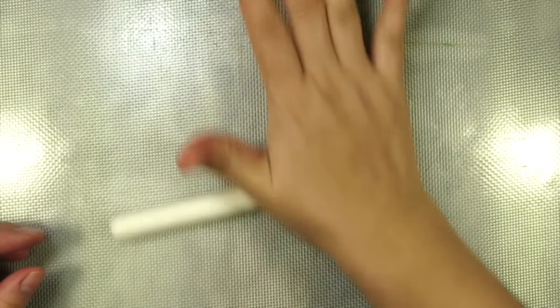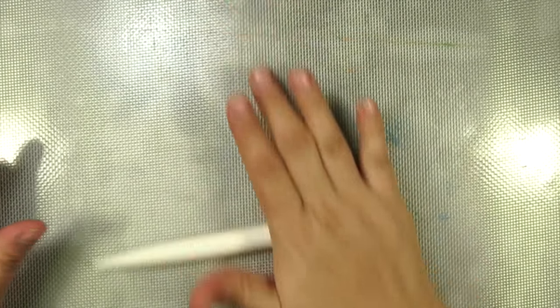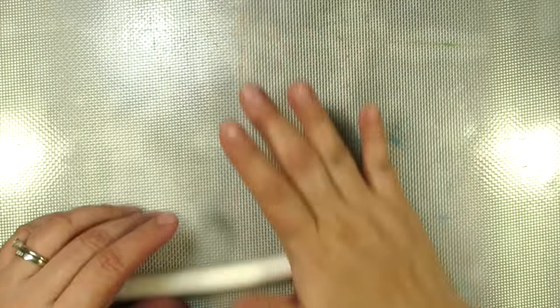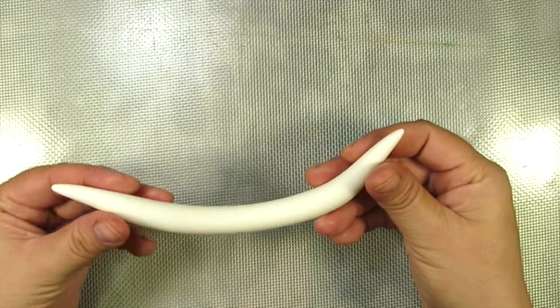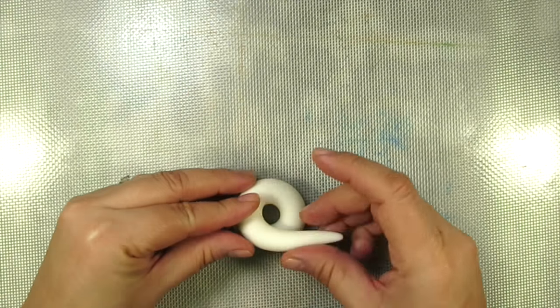This next part is super fun. I just love making icing swirls. For this, you're just going to take some white gum paste, roll it into a long tube. Make sure that you make both ends nice and pointy.